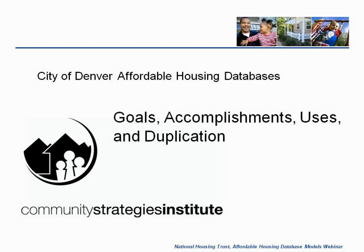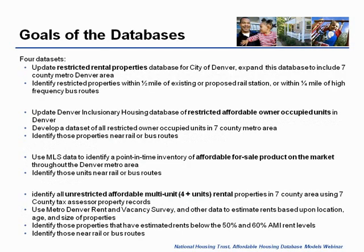Data from this project is supporting the work of the TOD collaborative and the fund, which is funded by many local and national foundations and local governments. The Community Strategies Institute was hired by the city to develop four specific data sets. For each, we gathered data for the entire seven-county metro Denver area, and then created sub-data sets of properties either within a half-mile ring around existing and future rail stations, or within a quarter mile of a high-frequency bus route with buses traveling every 15 minutes. The first is the restricted rental properties data set.